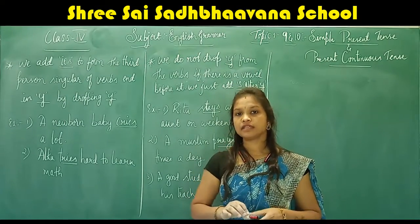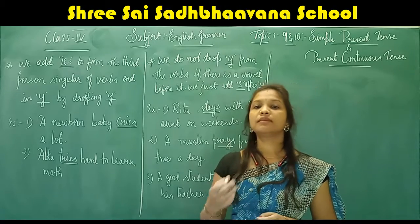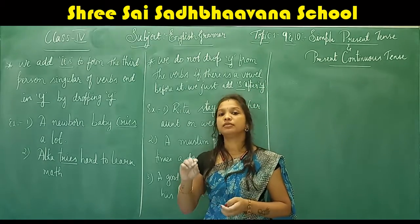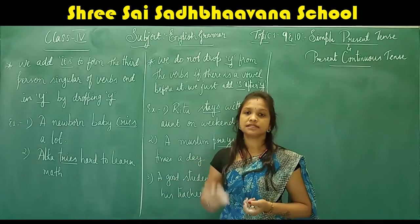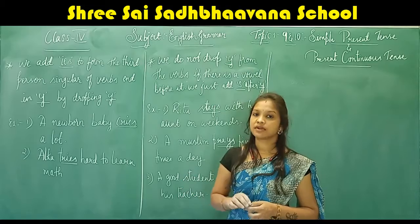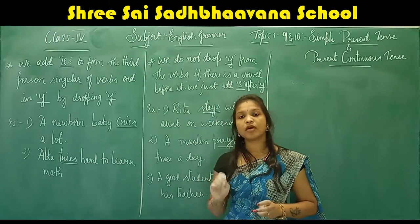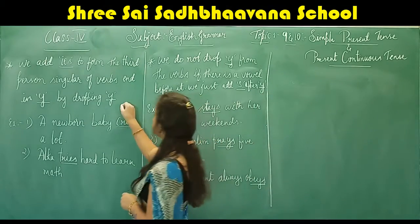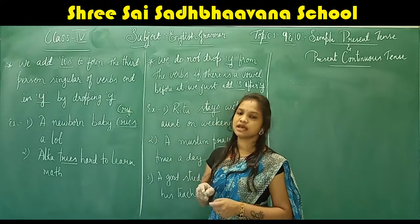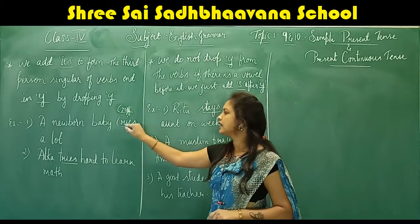We add 'ies' to form the third person singular when the verb ends in 'y'. When converting such a verb, we remove the letter 'y' and add 'ies'. For example: 'A newborn baby cries a lot.' The main verb is 'cry' — we remove 'y' and add 'ies' to get 'cries' for the third person singular.